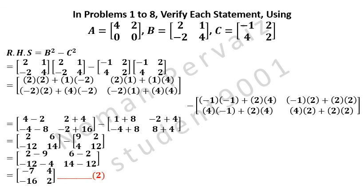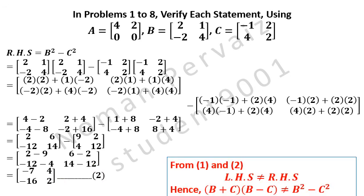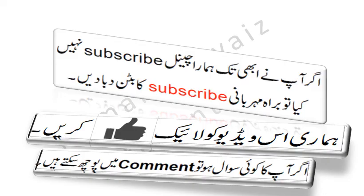This is called equation number 2. Both the answers are not the same, so from equation 1 and 2, left-hand side is not equal to right-hand side. Hence (B + C)(B minus C) is not equal to B squared minus C squared. Hence this is our answer. Please like this video and subscribe to our channel.